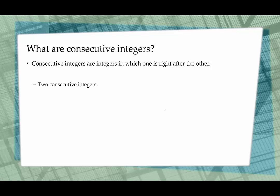If we want to represent two consecutive integers algebraically, we would call the first one x and the second one would be x plus 1. So that way no matter what I plug in for x, I'm always getting the number that comes right after it. Those would be our consecutive integers.